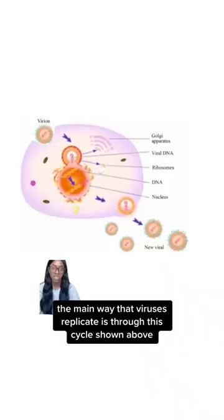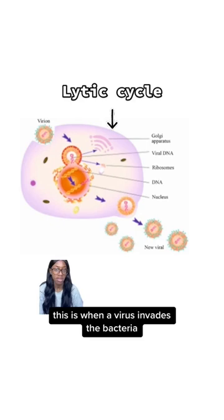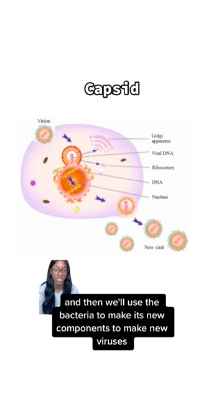The main way that viruses replicate is through this cycle shown above called the lytic cycle. This is when a virus invades a bacteria — it binds to the outer surface known as the capsid — and then will use the bacteria to make its new components to make new viruses.